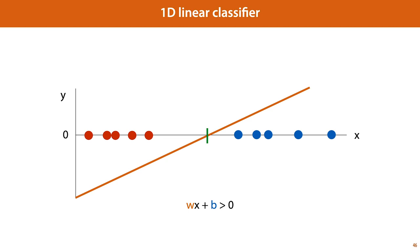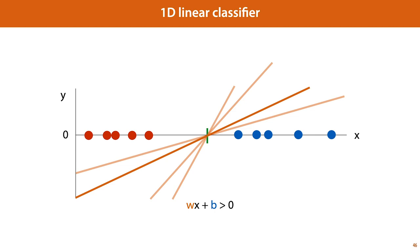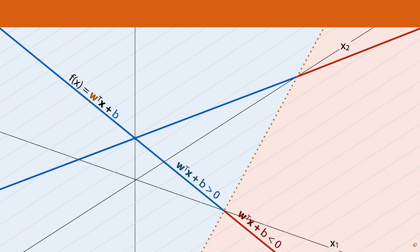If the function is positive, we assign the positive class, and if it is negative, we assign the negative class. Where this function equals zero is where it intersects the feature space, and that is the decision boundary. Note that by defining the decision boundary in this way, we have actually given ourselves an extra degree of freedom. The same decision boundary can be defined by infinitely many hyperplanes, and we'll use this extra degree to help us define a single hyperplane to optimize.